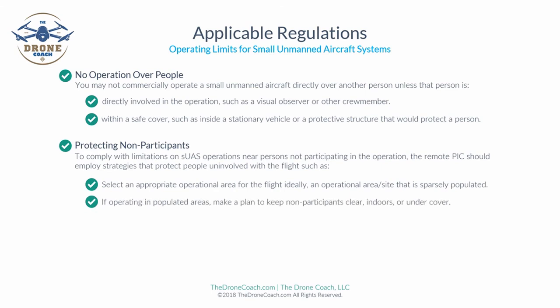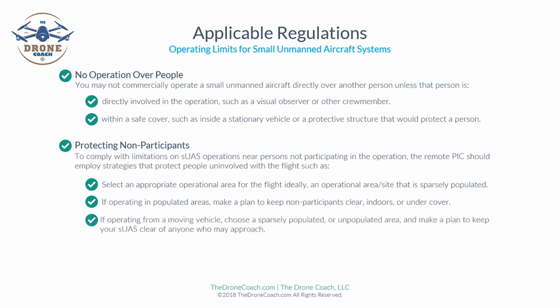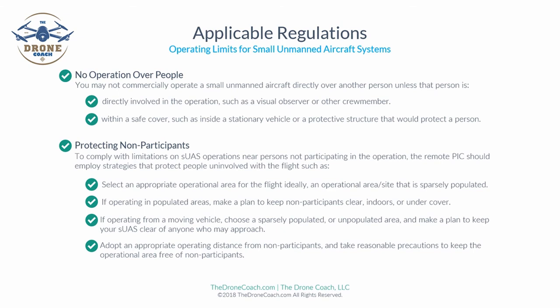If operating in populated areas, make a plan to keep non-participants clear, indoors, or under cover. If operating your SUAS from a moving vehicle, you must choose a sparsely populated or unpopulated area and make a plan to keep your unmanned aircraft clear of anyone who may approach. Adopt an appropriate operating distance from non-participants and take reasonable precautions to keep the operational area free of non-participants.